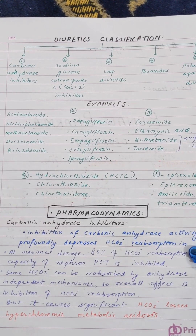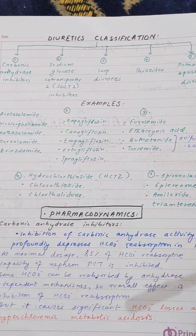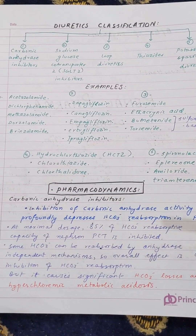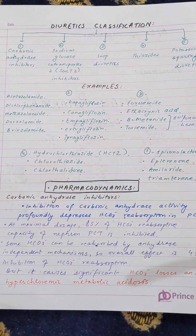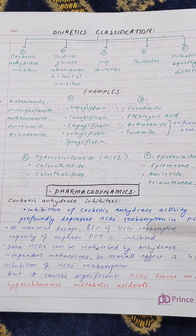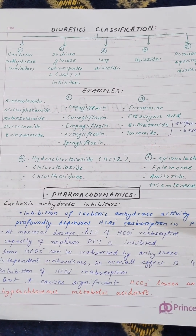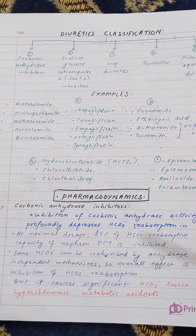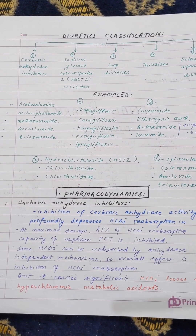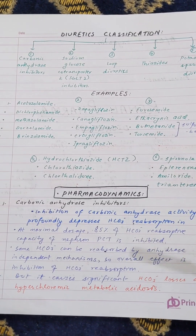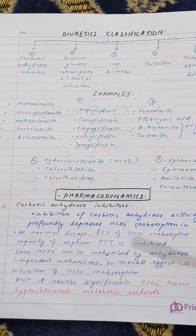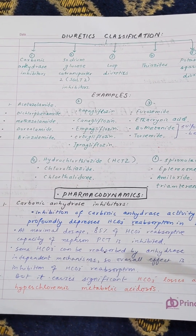Let's start with carbonic anhydrase inhibitors. The following are the actions they perform on the body — this is their mode of action. As we know, a carbonic anhydrase inhibitor inhibits the enzyme carbonic anhydrase, which is responsible for the hydration and dehydration of CO2.